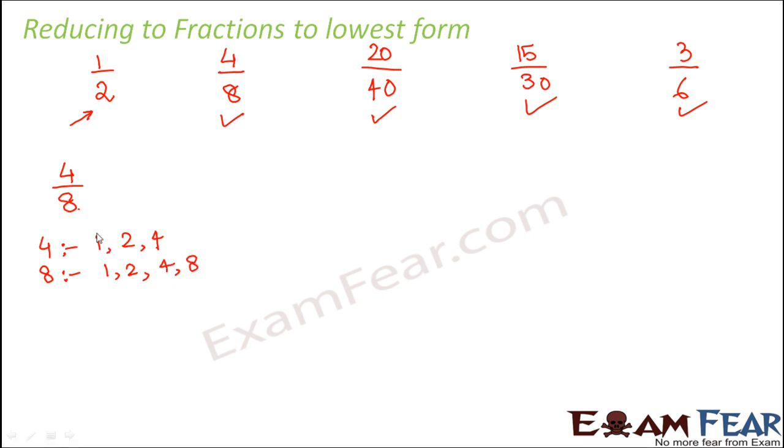These are the factors of 8. So you see there are common factors between 4 and 8 except 1, because 1 is a common factor between any two numbers. Between any two numbers, 1 will always be a common factor.